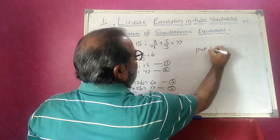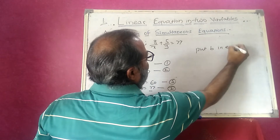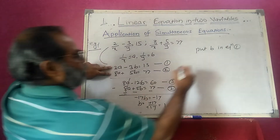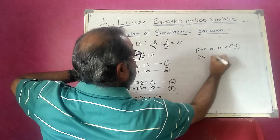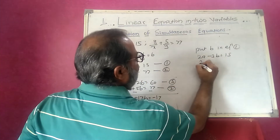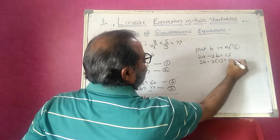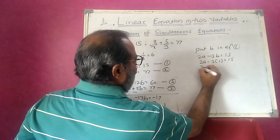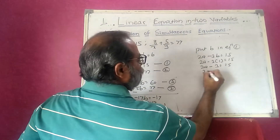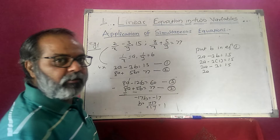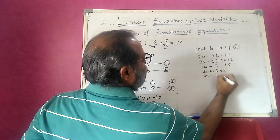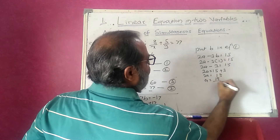I substitute the value of b into equation 1. Equation 1 is 2a minus 3b equals 15. Putting b equal to 1: 2a minus 3 times 1 equals 15, so 2a minus 3 equals 15. Transposing, 2a equals 15 plus 3 equals 18, therefore a equals 18 divided by 2, which is 9.